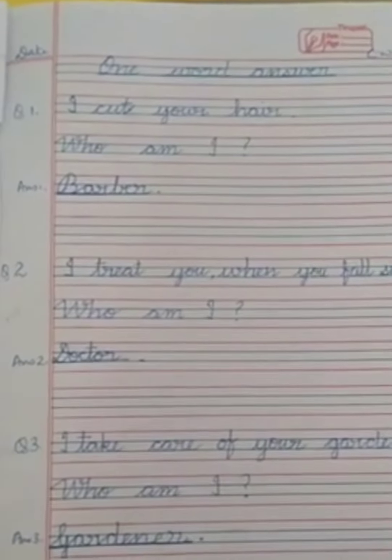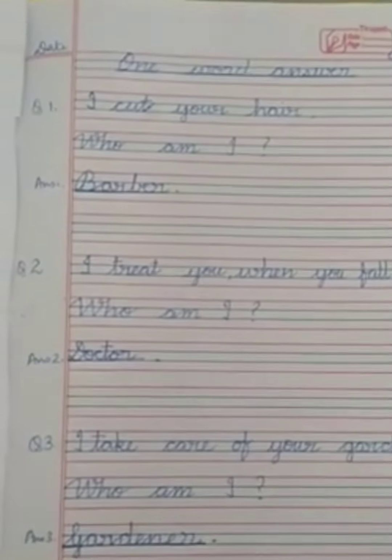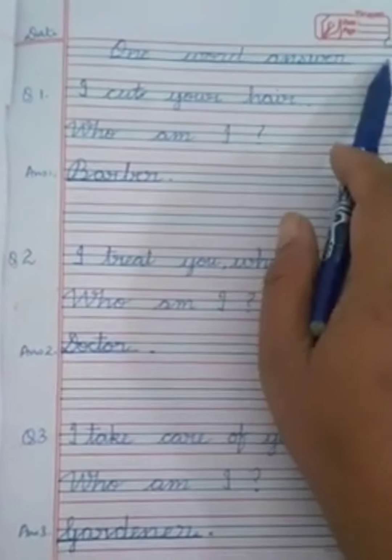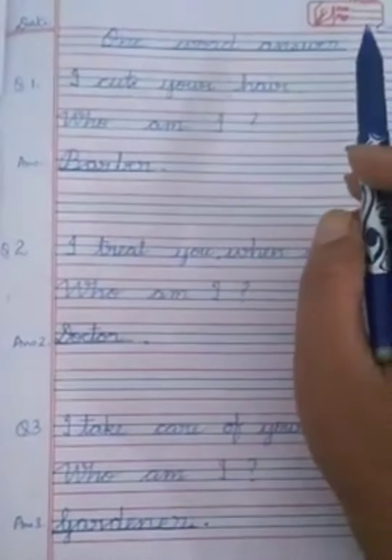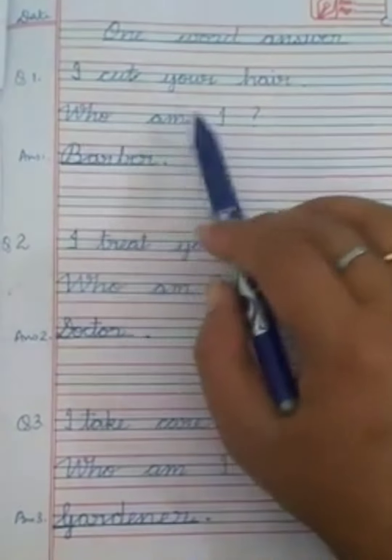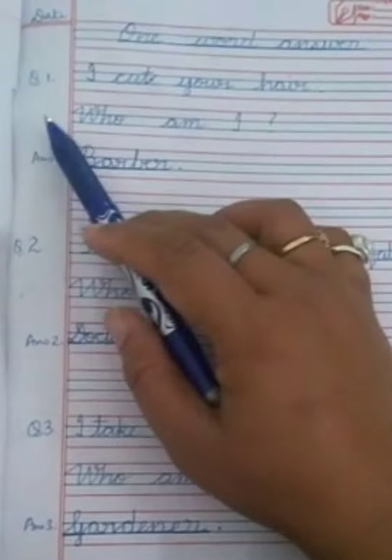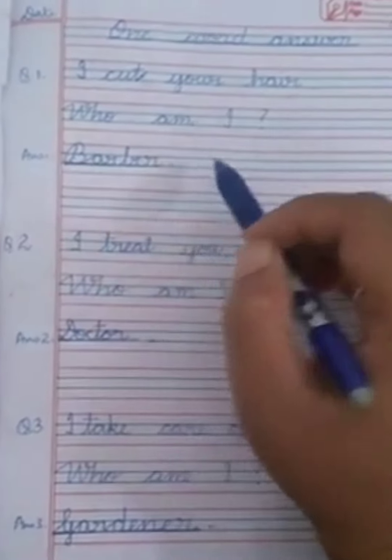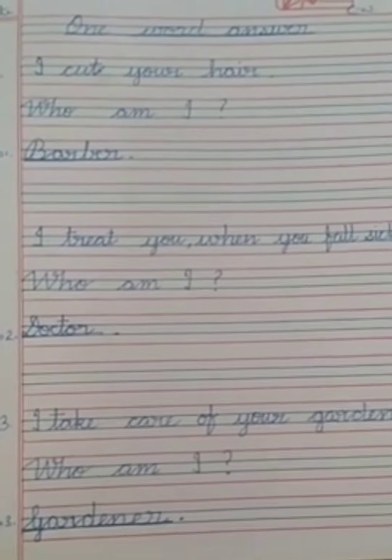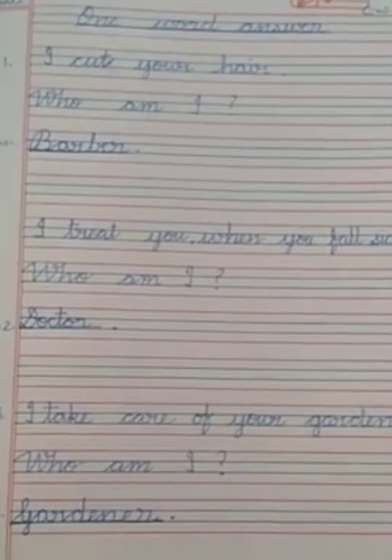Children, today we are going to do our next exercise, one word answer. You will write the heading CW and the date. Children, in this I have written who am I as a question here. So we are going to do this in one word answer. I'm not making any separate exercise for this, but this can also come.